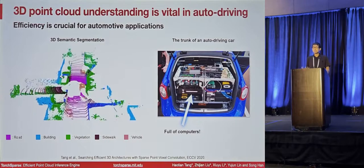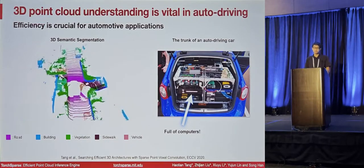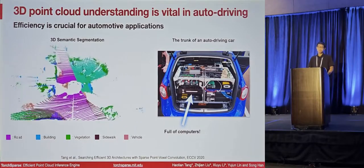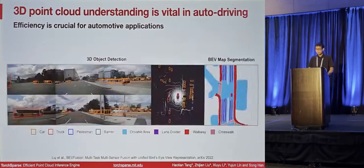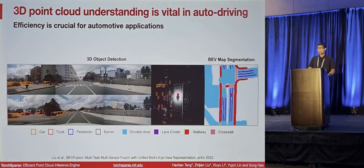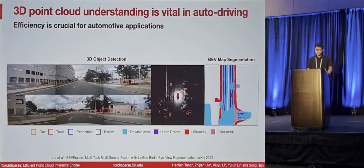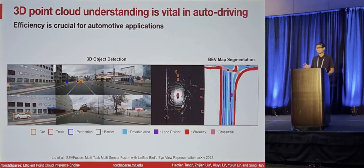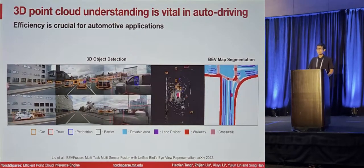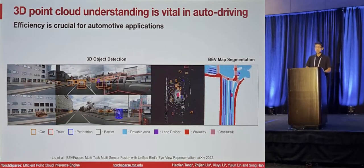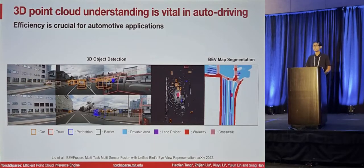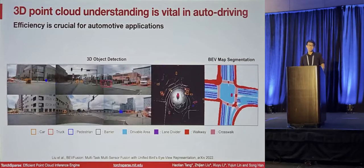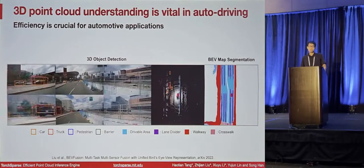There are a lot of challenging tasks for us to perform. For example, 3D semantic segmentation, in which we assign a point-wise label to each of the points in the LiDAR scan. We also perform 3D object detection, used to localize foreground objects within the LiDAR scan. We can also perform BEV map segmentation, which is widely used for reconstruction of the HD map — very useful for cars driving in rural areas without GPS or Wi-Fi signal.